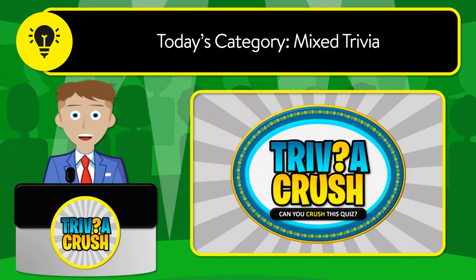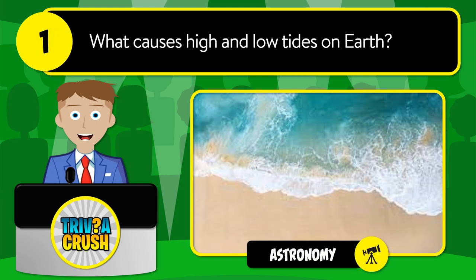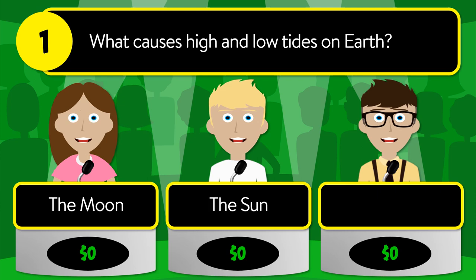Welcome to Trivia Crush. Today's category is mixed trivia. Let's get started. Question number one: what causes high and low tides on Earth? Is it the moon, the sun, or the sun and moon?